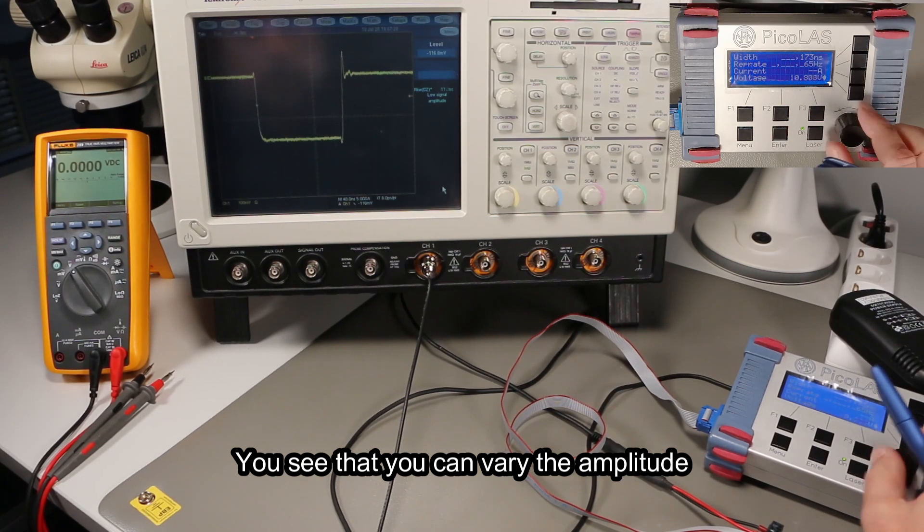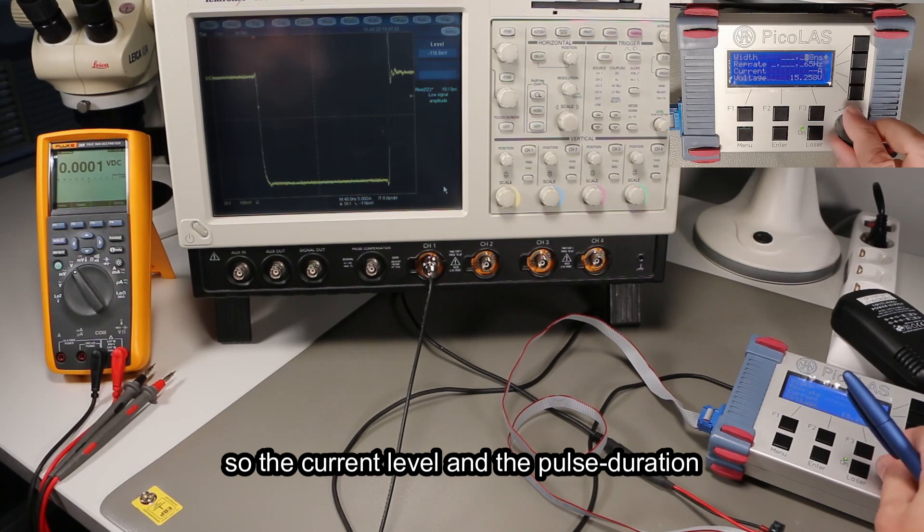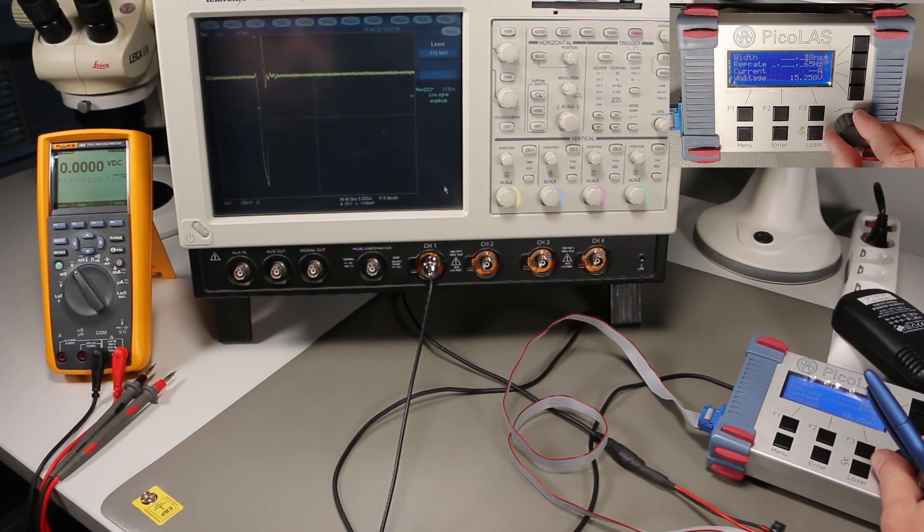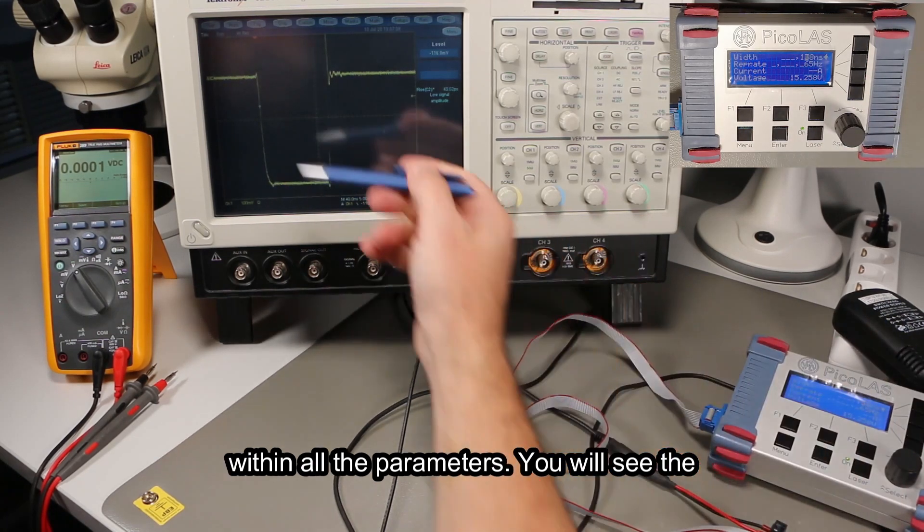You see that you can vary the amplitude, the current level, and the pulse duration separately, starting from the shortest pulse to the longest allowed pulse and within all the parameters.